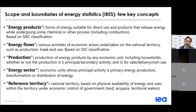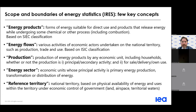Then we have the concept of production. This is an extremely important concept and marks the starting point at which energy enters energy statistics. IRIS provides definitions and conventions regarding the boundaries of production, the form of energy produced — whether primary or secondary — and the producer type, whether main activity producer or auto producer. These conventions have implications for where production appears in the energy balance.